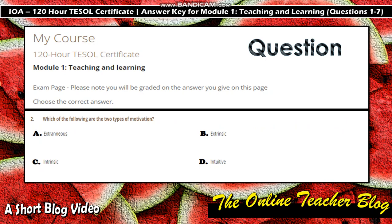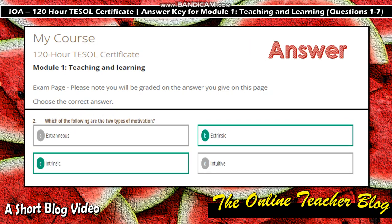Question 2: Which of the following are the two types of motivation? A) Extraneous, B) Extrinsic, C) Intrinsic, D) Intuitive. The answer is letter B and letter C: extrinsic and intrinsic. Just remember — extrinsic and intrinsic are the two types of motivation.